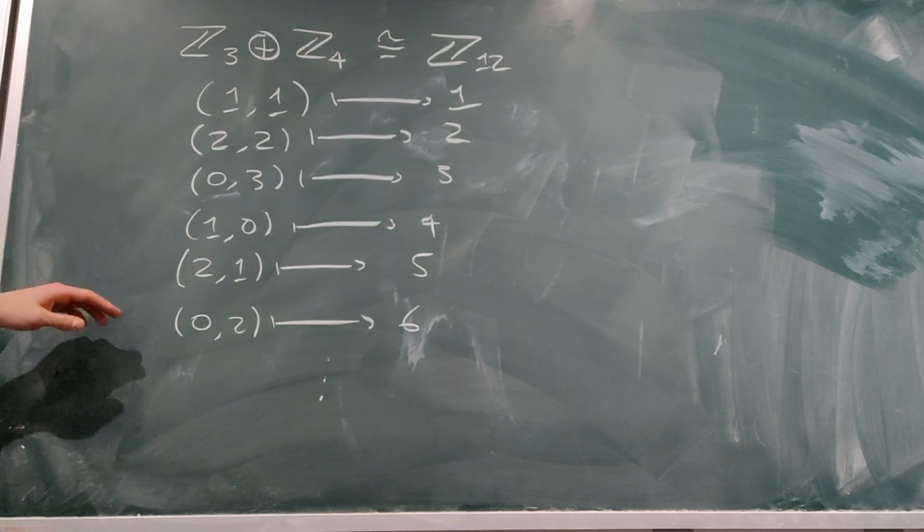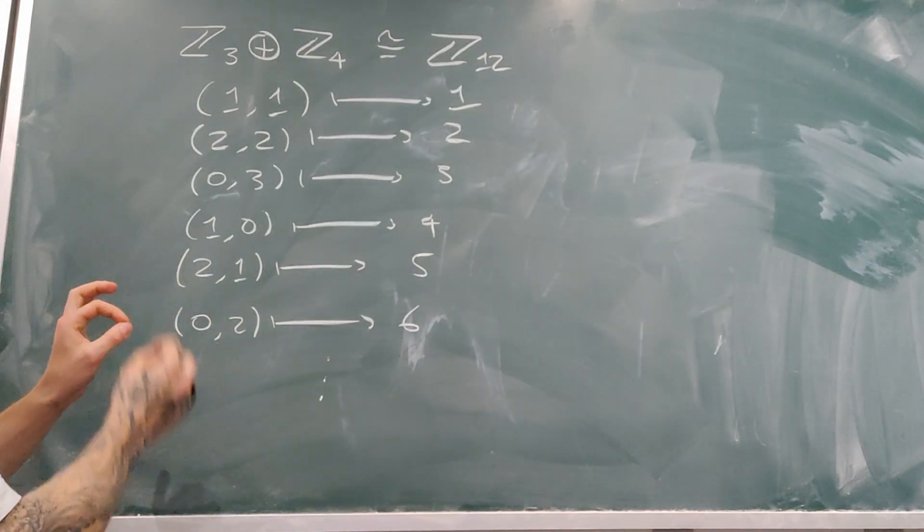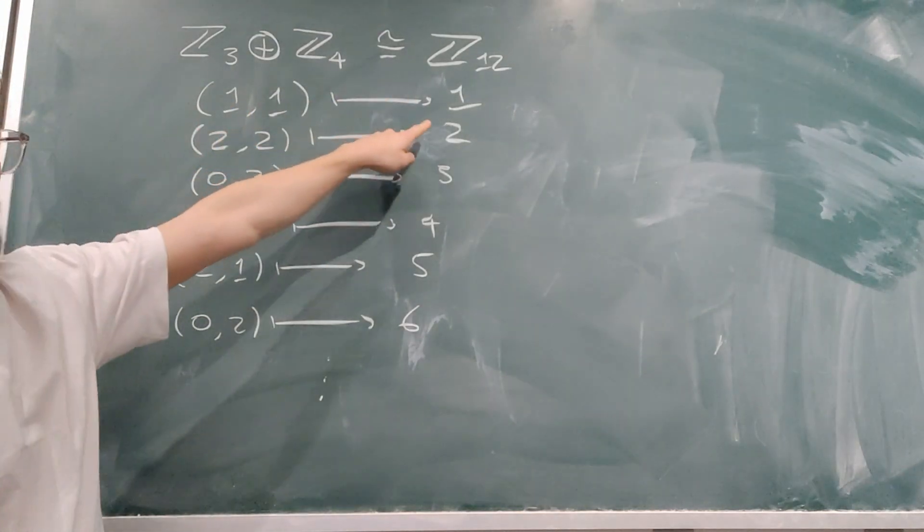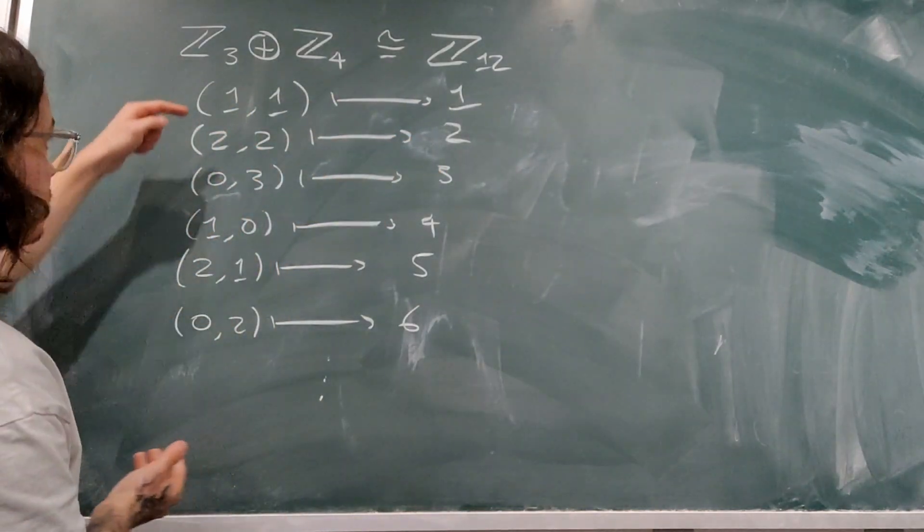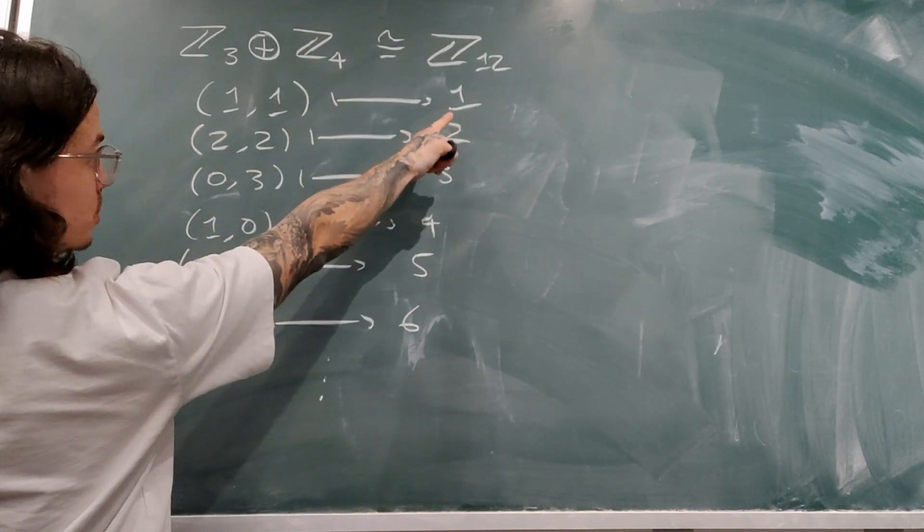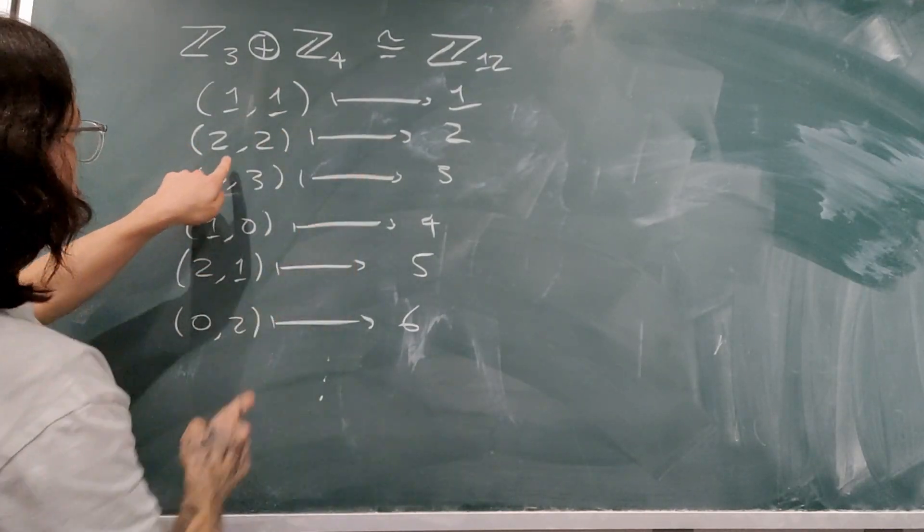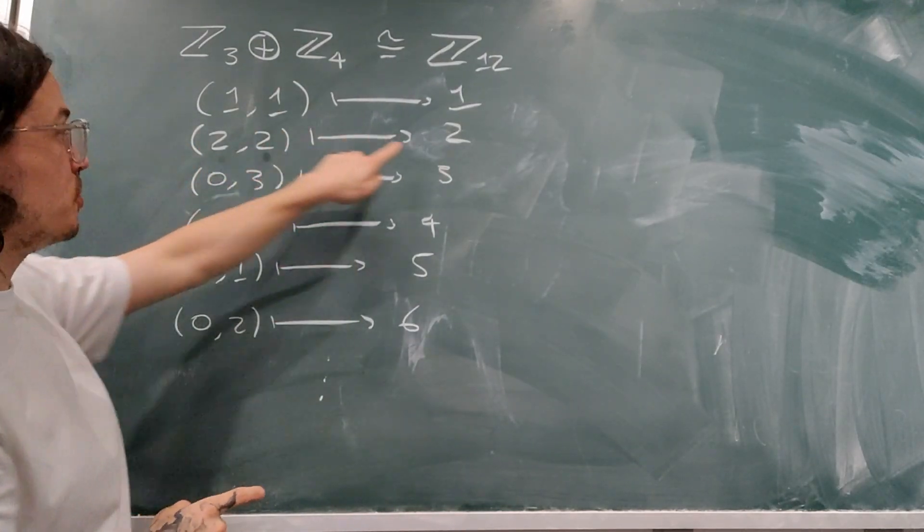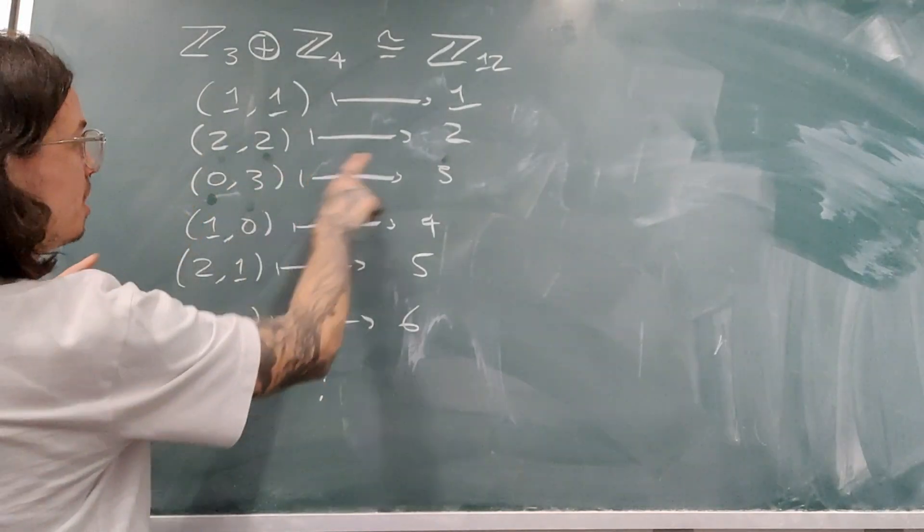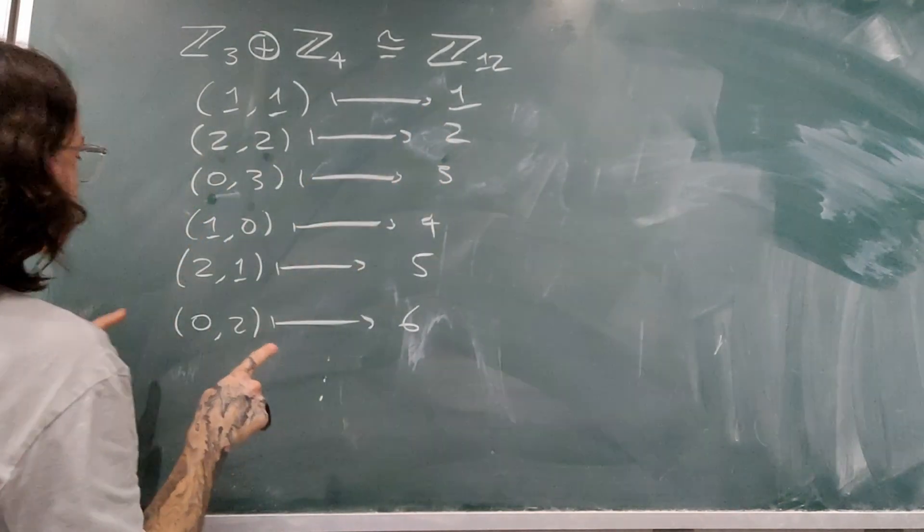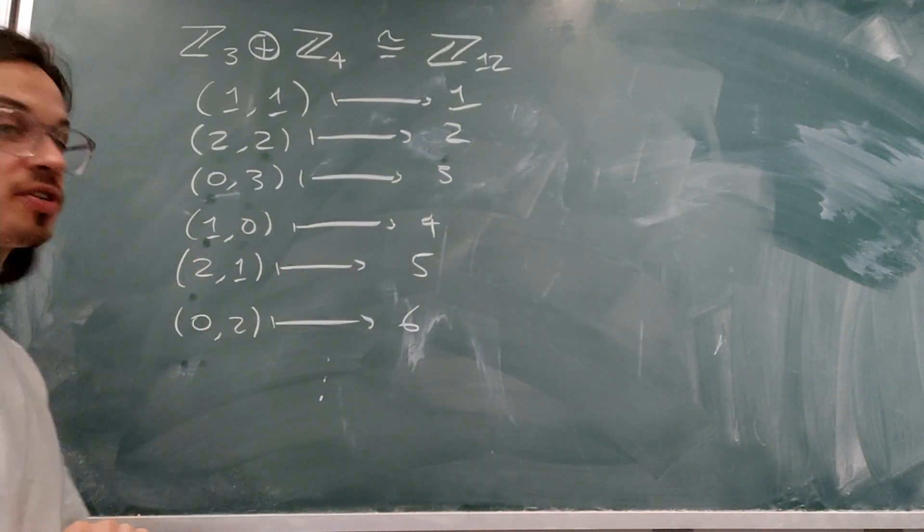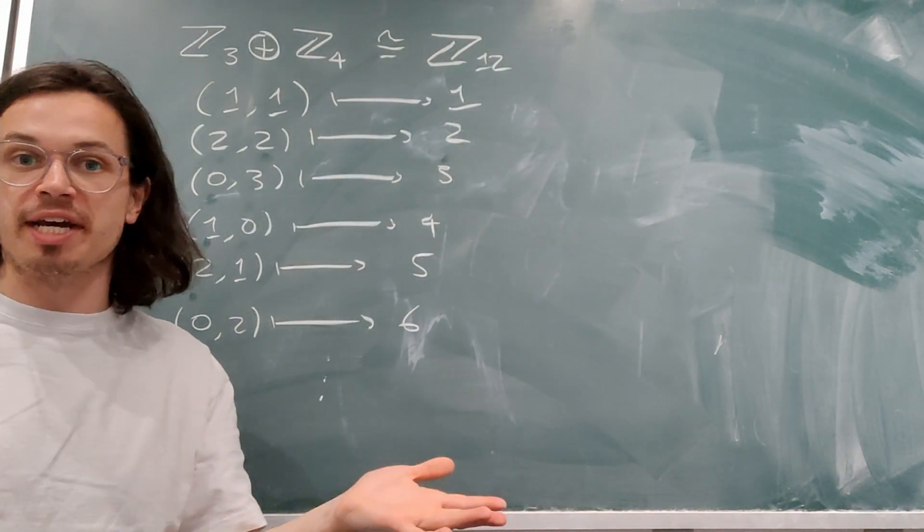So to just write down a few elements of this isomorphism, since I've asked that the cyclic generators are preserved by this isomorphism, we necessarily have that (1,1) is mapping to 1, but then that determines the rest of the isomorphism. If I add 1+1 to itself, I get (2,2), and on the other side, if I add 1 to itself, I get 2. So (2,2) is necessarily getting sent to 2. If I keep doing that, then I get (1,0) maps to 4, (2,1) maps to 5, (0,2) maps to 6, dot dot dot.